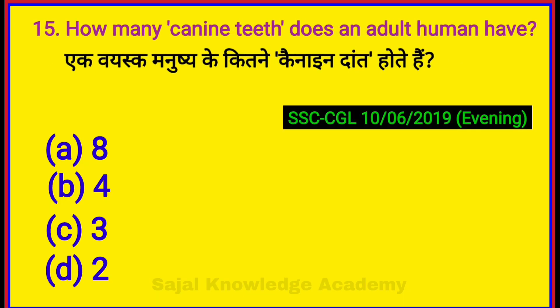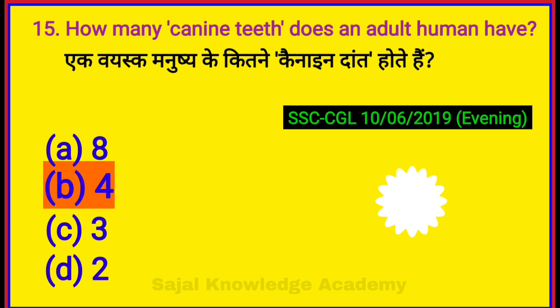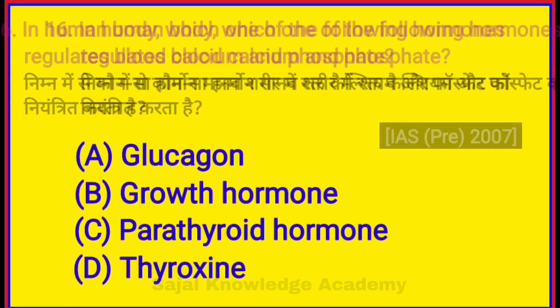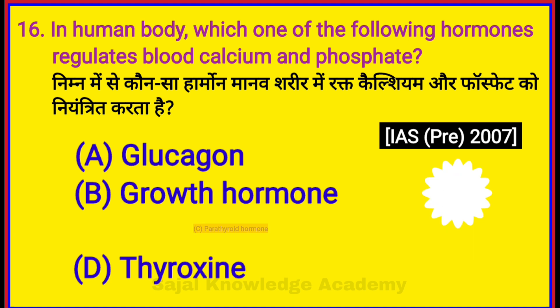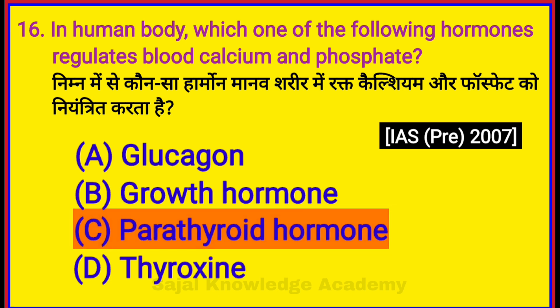How many canine teeth does an adult human have? Answer B: 4. In the human body, which one of the following hormones regulates blood calcium and phosphate? Option C: Parathyroid hormone.